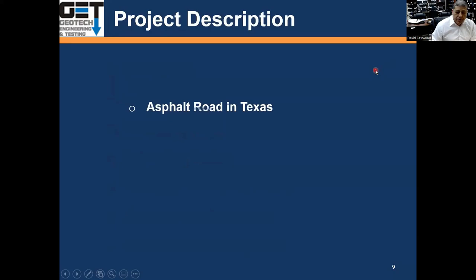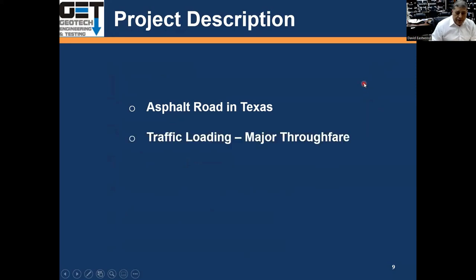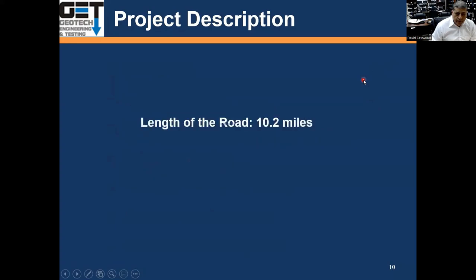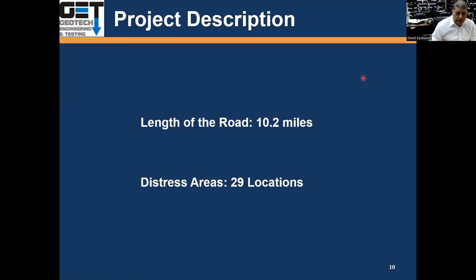The project description is an asphalt road in Montgomery County, Texas. Traffic loading is a major thoroughfare, two to four lanes. The length of the road is about 10.2 miles, and it has 29 distressed locations.